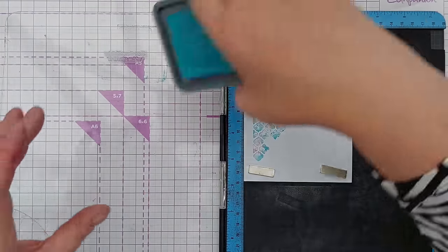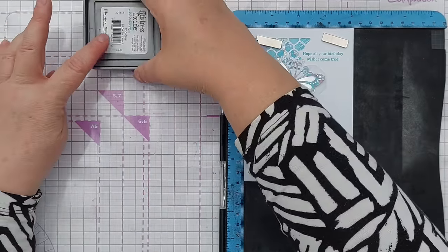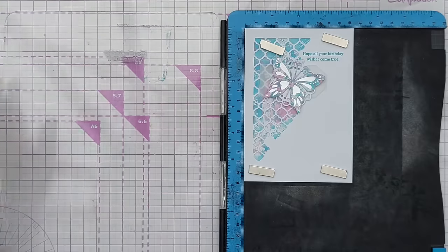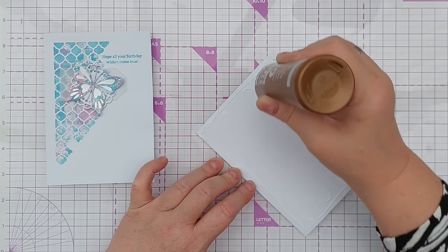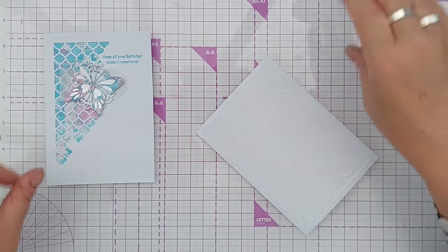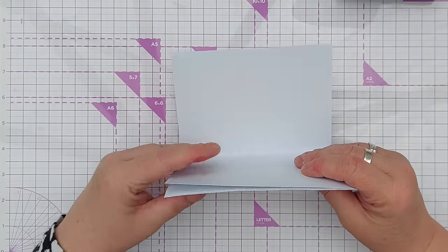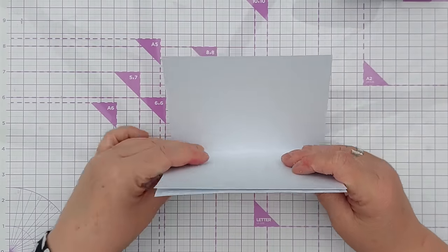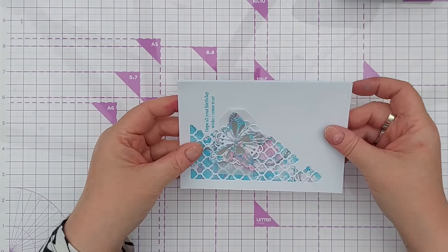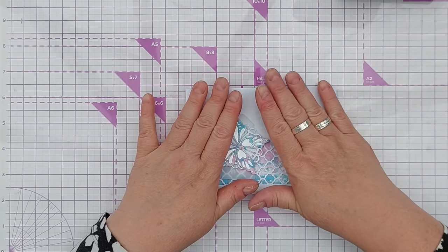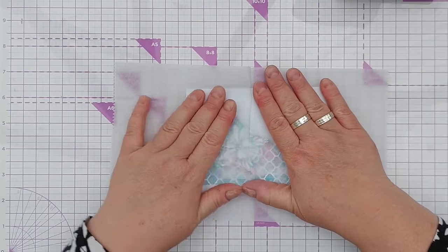And now this can go on the front of my card blank. I'll add some glue to the card blank—doesn't matter which one you add the glue to—and knock them together. They should be more or less the same size. If they're not I can always get my guillotine out and trim things down. I'm going to press that down.